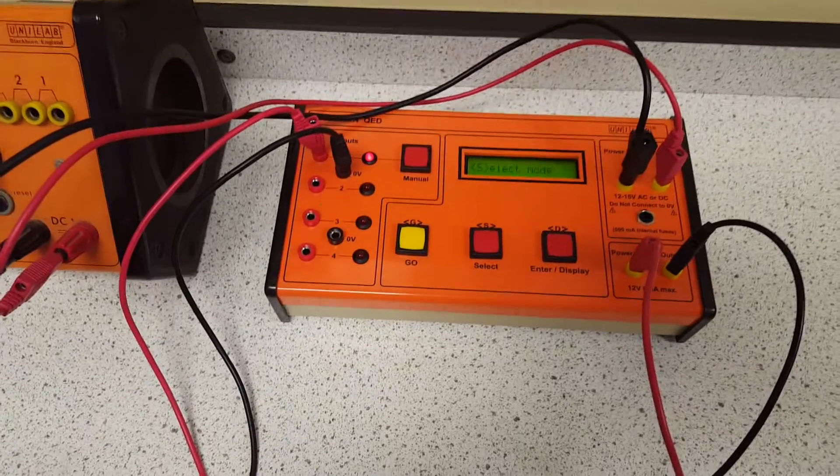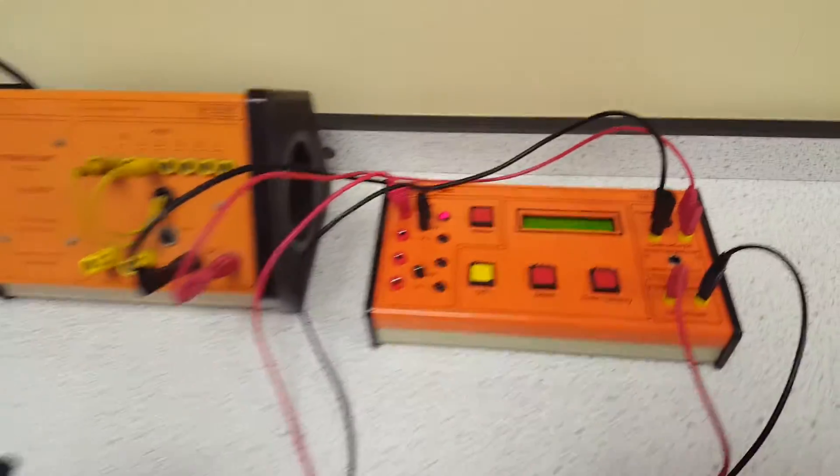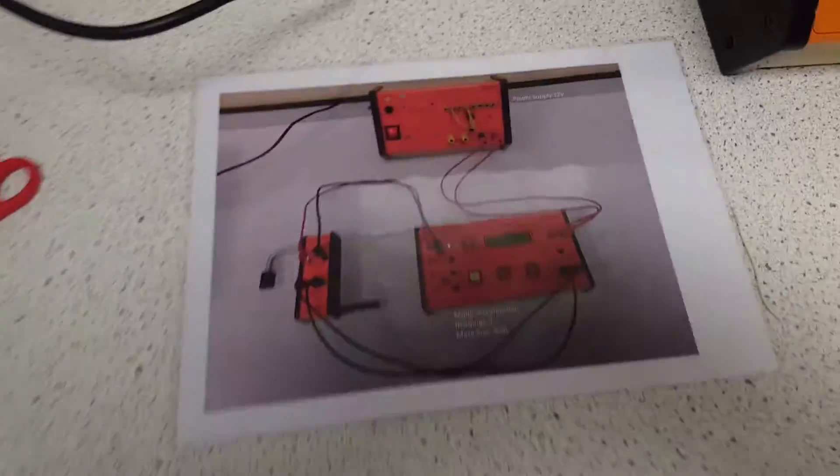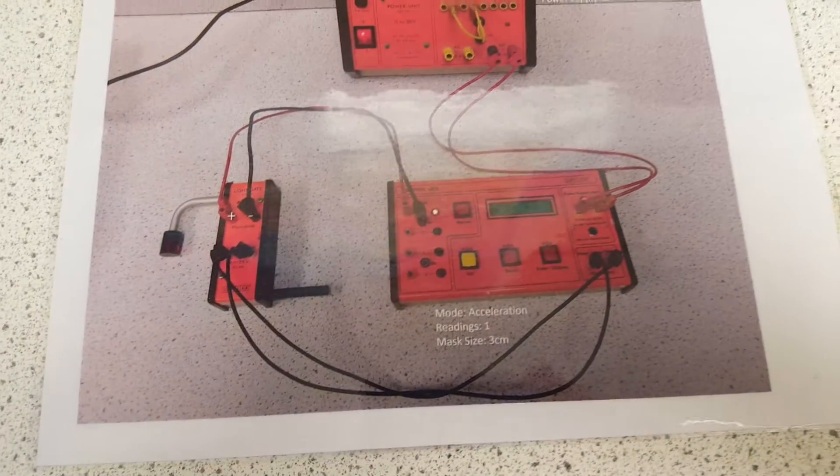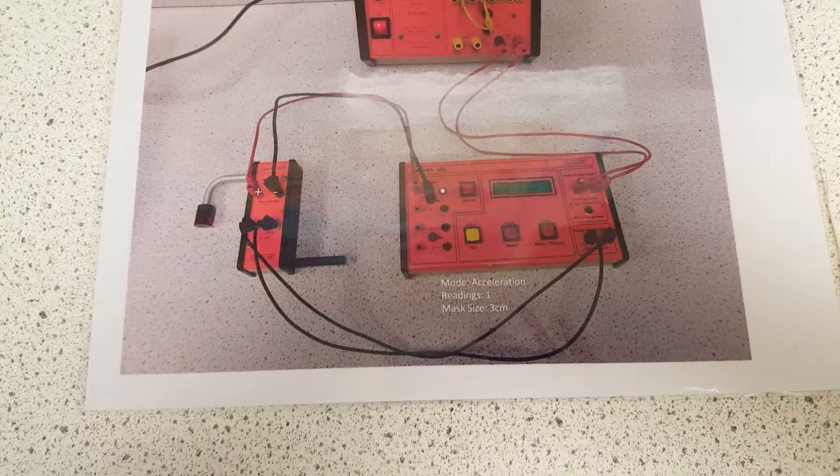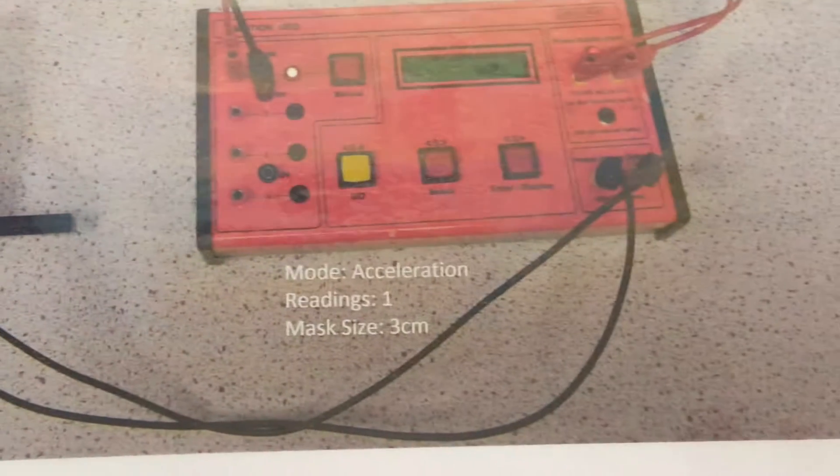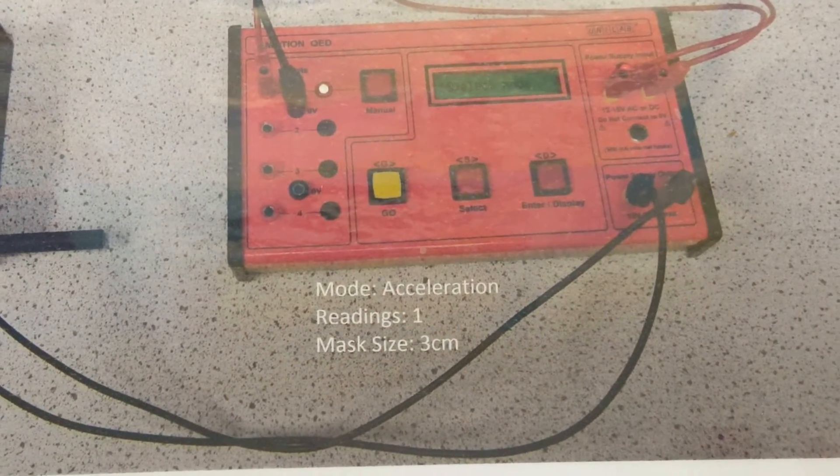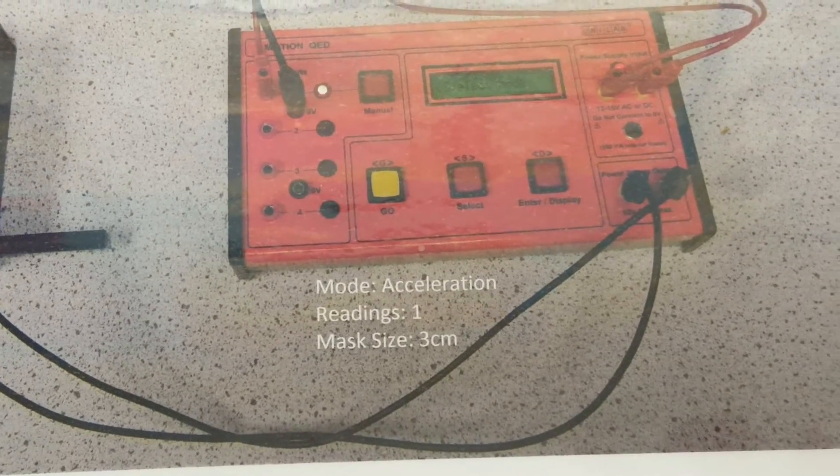This unit here is called the QED, and we have an instruction sheet here which tells you how to set it up and where the wirings are. It also tells you that what we want is the mode to be acceleration, one reading, and mass size three centimeters.